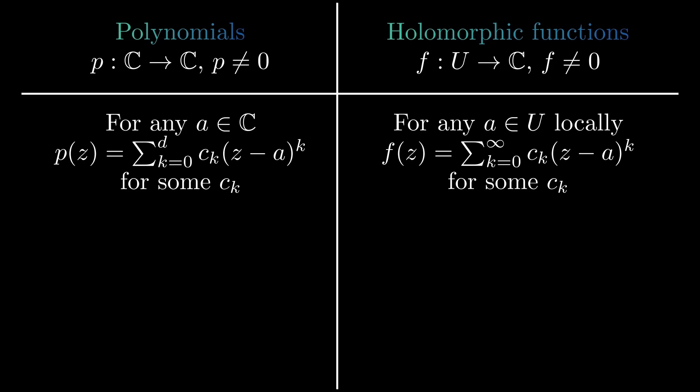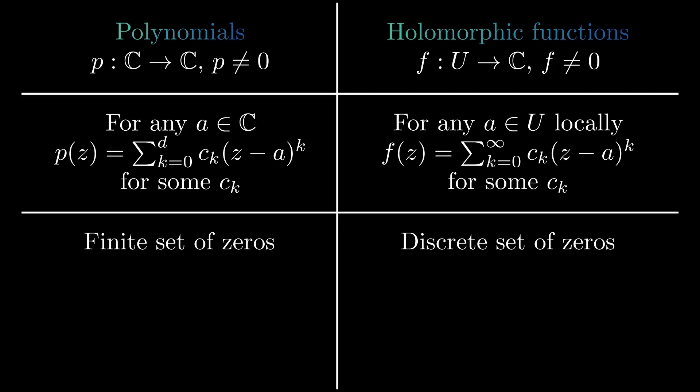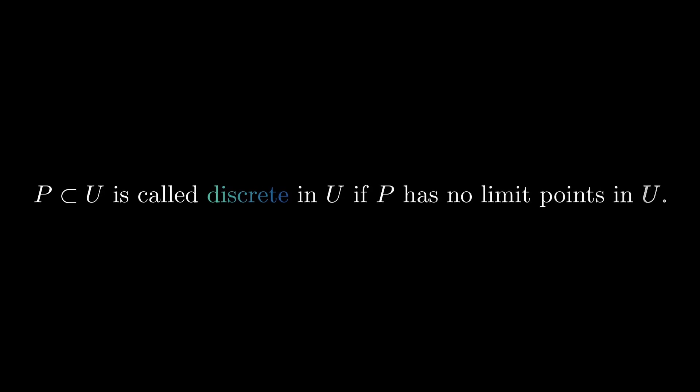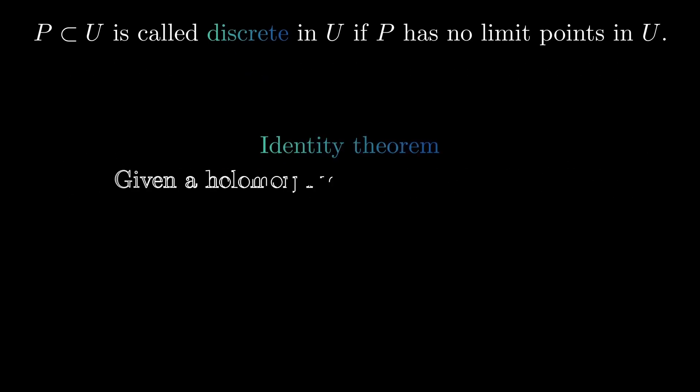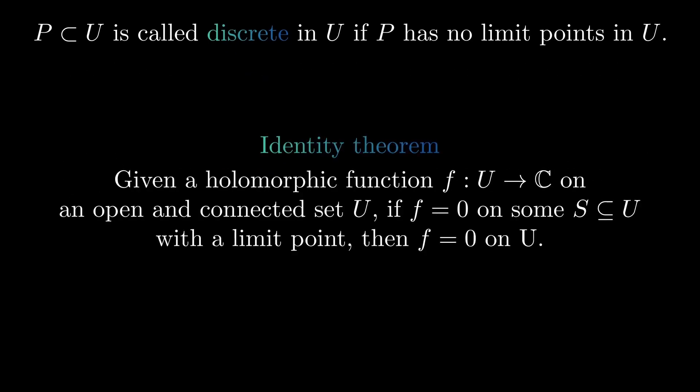For non-zero polynomials, there is always a finite set of zeros. For holomorphic functions, the set of zeros is always discrete in its domain. The subset P of U is called discrete in U if P has no limit points in U. The fact that the zero set of a holomorphic function is always discrete is a consequence of the identity theorem, which tells us that if a holomorphic function on an open and connected set is zero on a set with a limit point, then it must be zero everywhere.